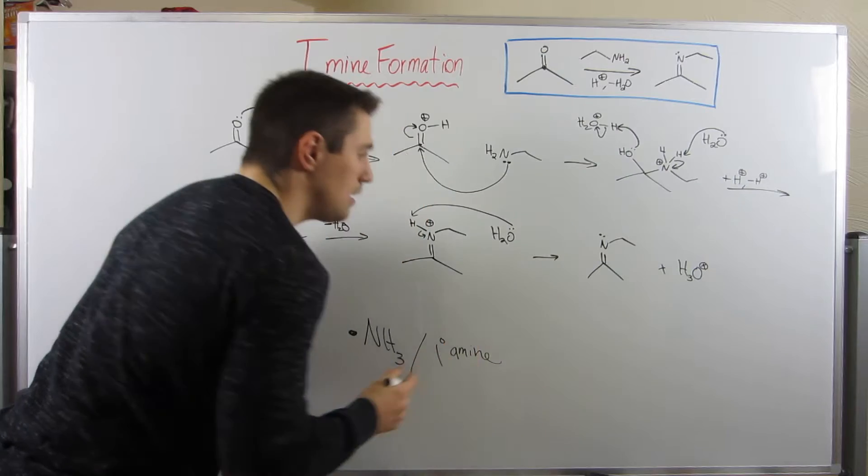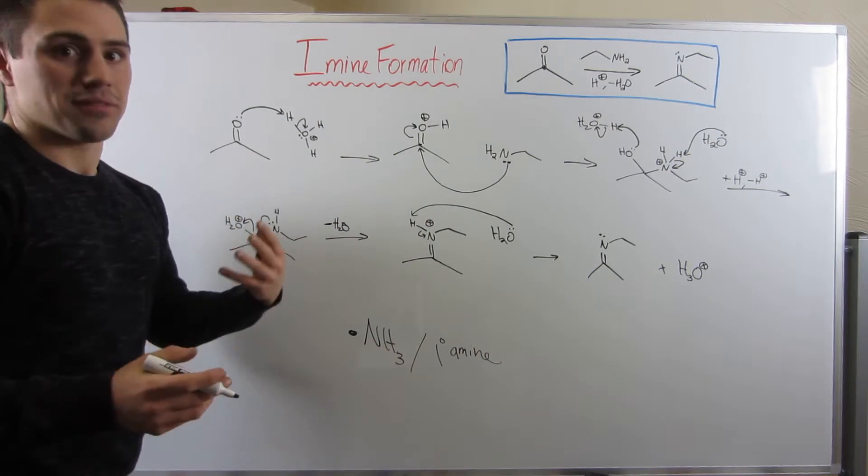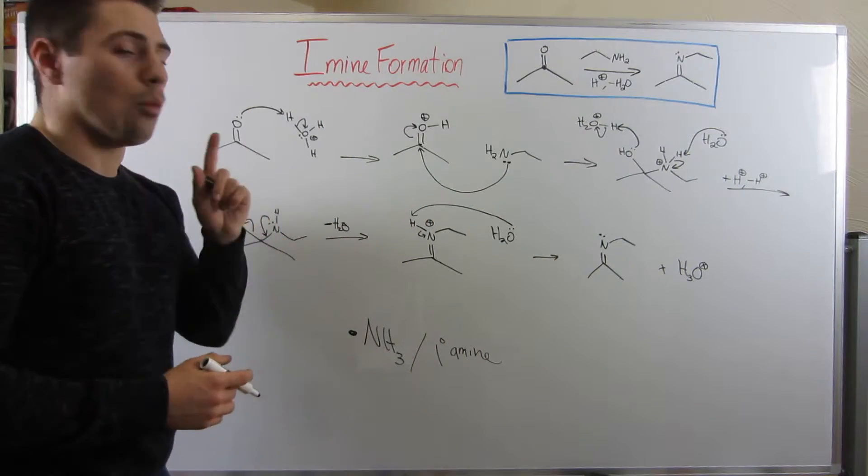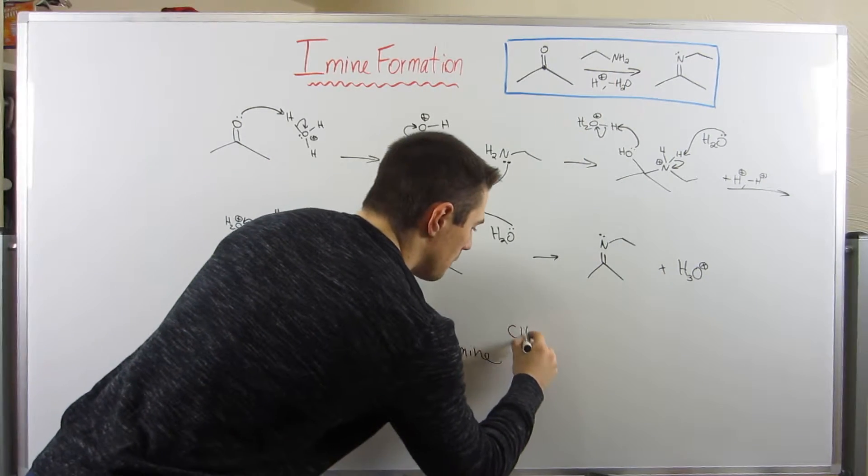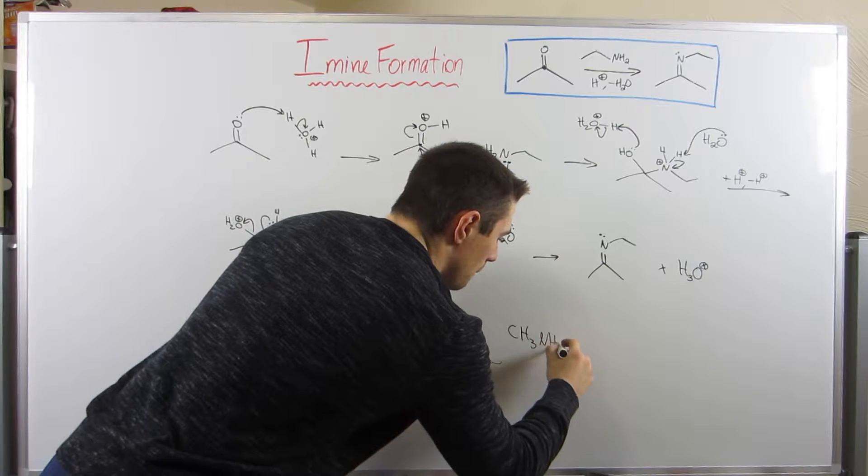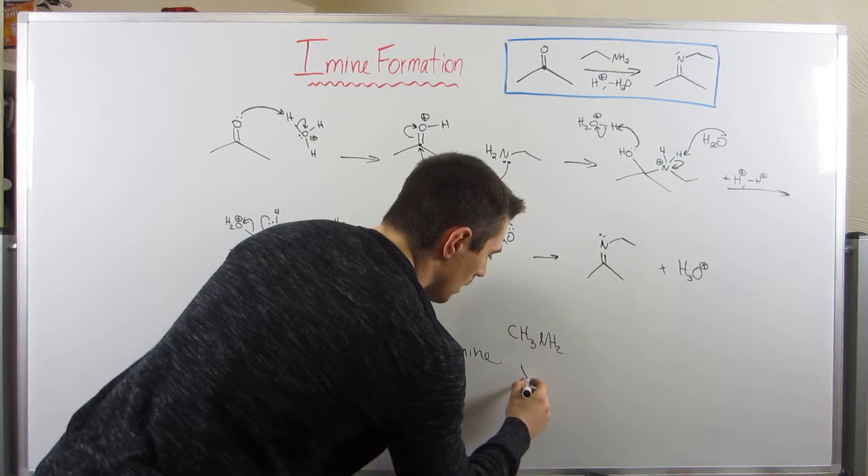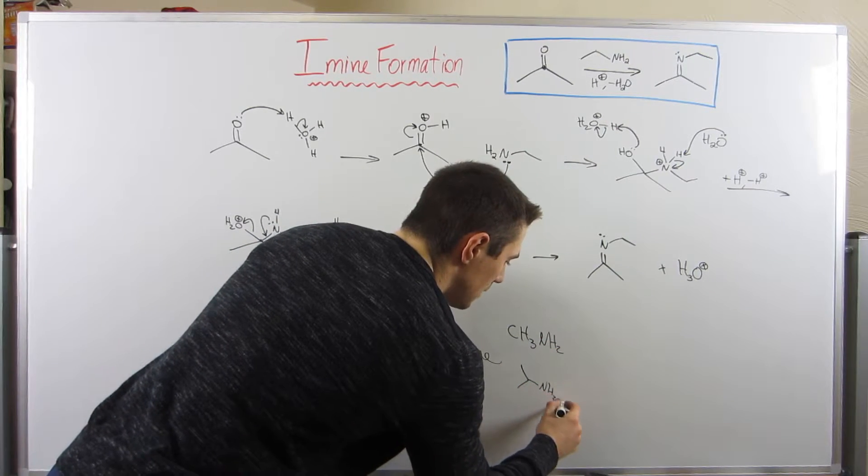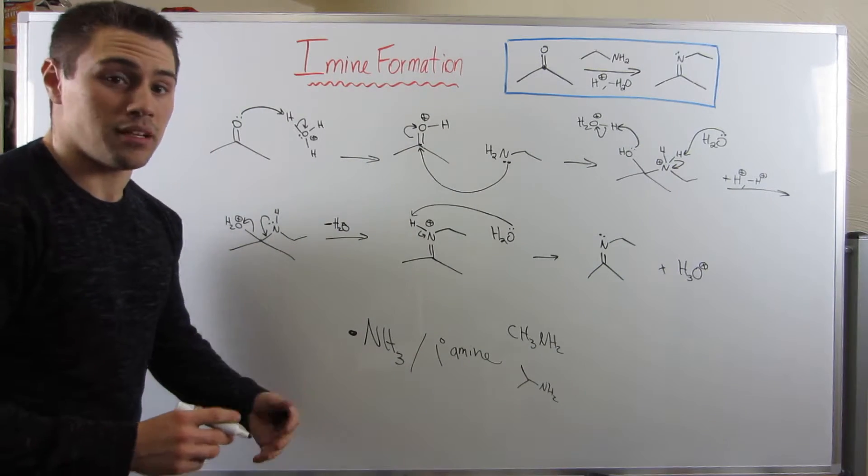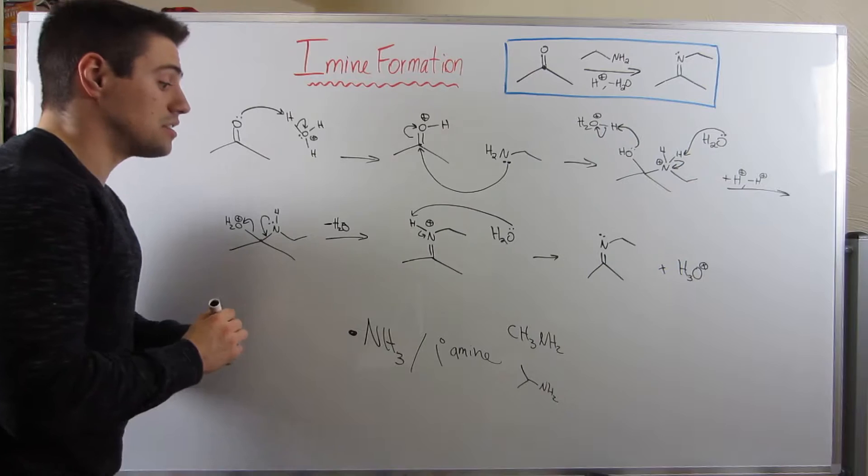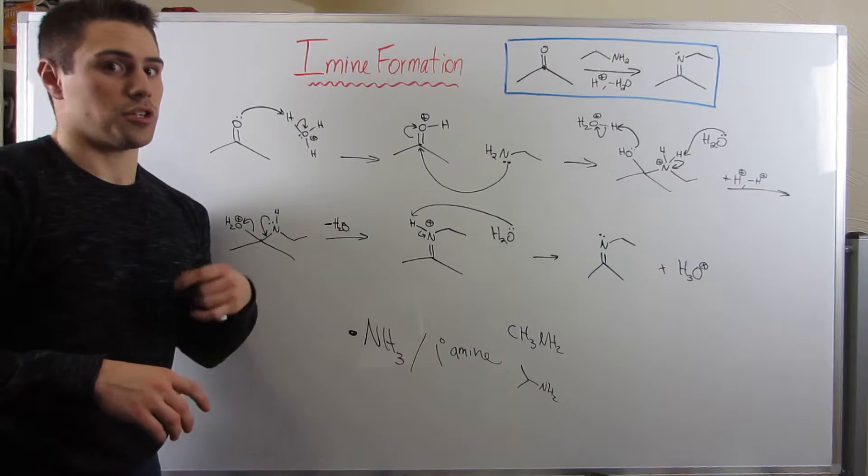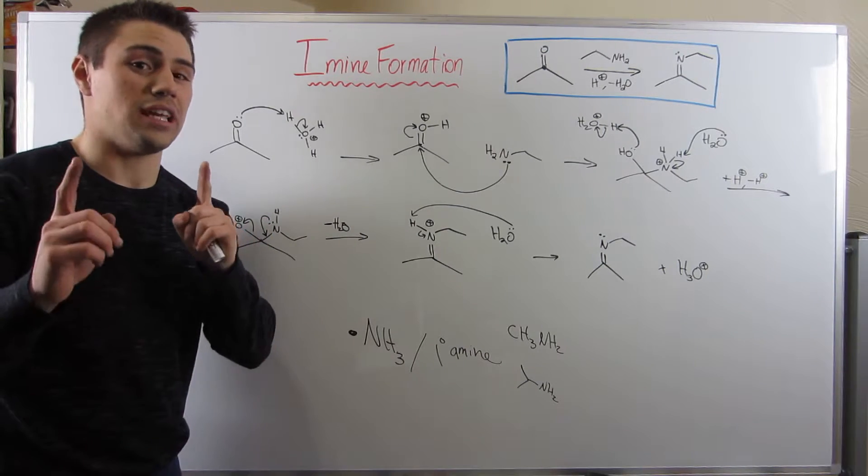And by primary amine, I just mean that you have to have one bond to carbon. You see how we have this ethylamine or maybe methylamine or isopropylamine. You can't have diethylamine. You can only have one bond to carbon because if you have more than one, it turns into a different functional group, which we'll see in the next video.